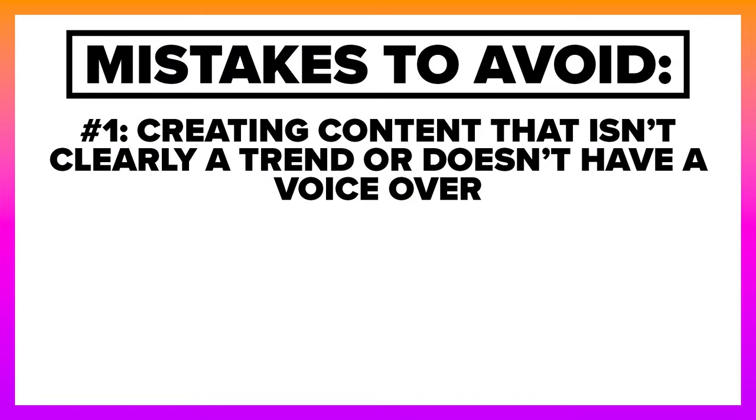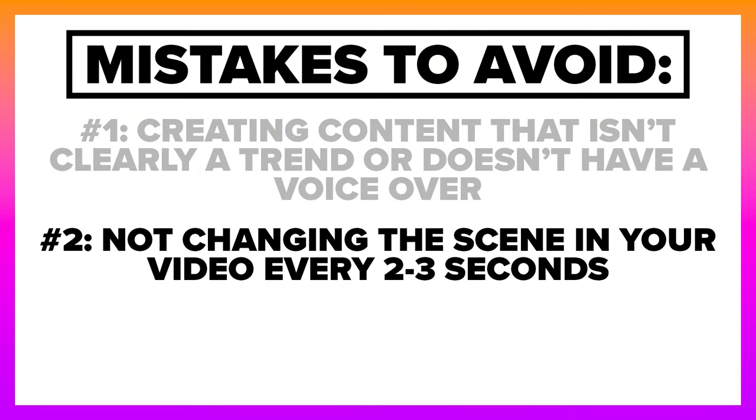You also need to avoid the three mistakes the Instagram algorithm hates right now. First, make sure your content has a voiceover, unless it's clearly a trend using a trending sound. Instagram is beginning to prioritize posts that keep people on the platform longer, and adding a voiceover skyrockets reach. Second, change the scenes in your video every two to three seconds — this resets the viewer's attention, keeps them watching longer, and the algorithm pushes your post out more.